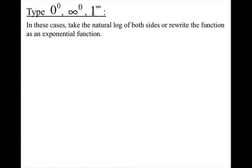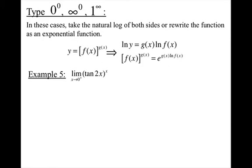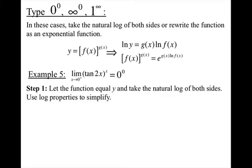For the exponential indeterminate forms, take the natural log of both sides or rewrite as an exponential. When you have a function to the power of another function and take the natural log, you can bring the exponent down in front using log properties. Or rewrite it as e to the power of g(x)·ln(f(x)).